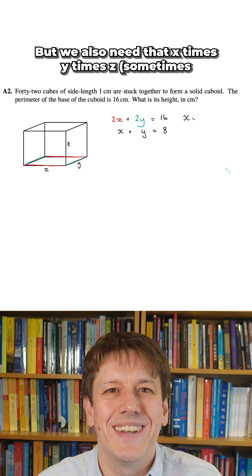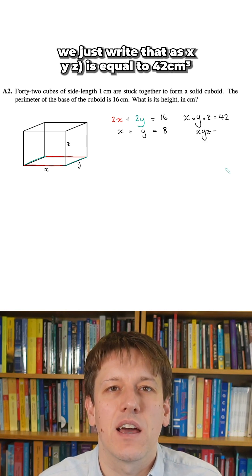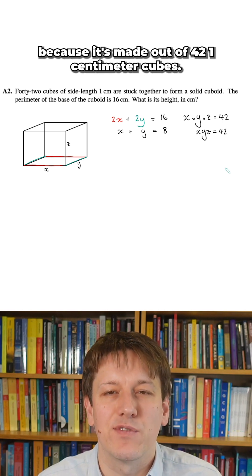But we also need that x times y times z, sometimes we just write that as xyz, is equal to 42cm cubed because it's made out of 42 1cm cubes.